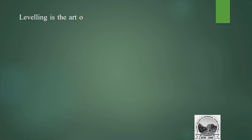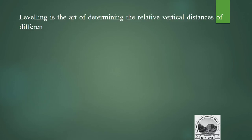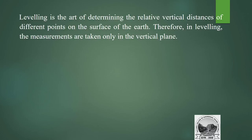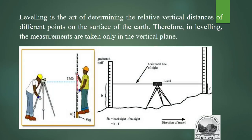Leveling is the art of determining the relative vertical distance of different points on the surface of the earth. In leveling, measurements are taken only in the vertical plane. This figure shows how leveling is done using a dumpy level, with readings taken using a staff — backsight and foresight — which will be discussed in later slides.